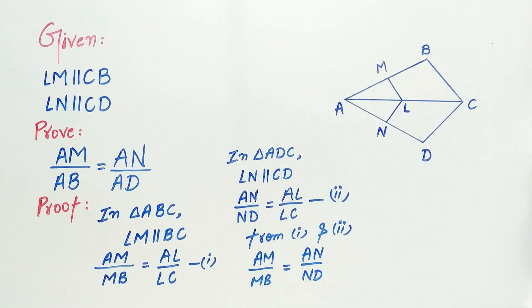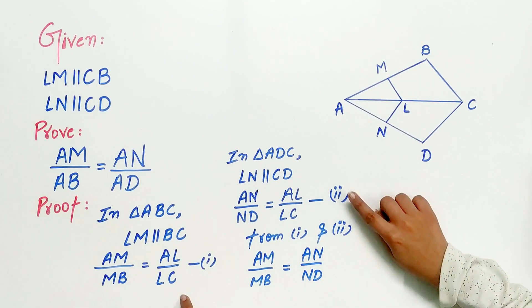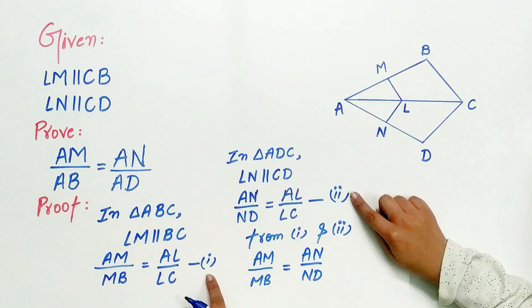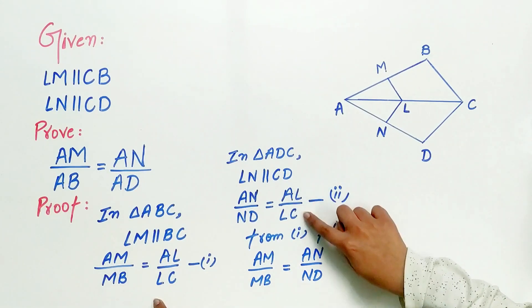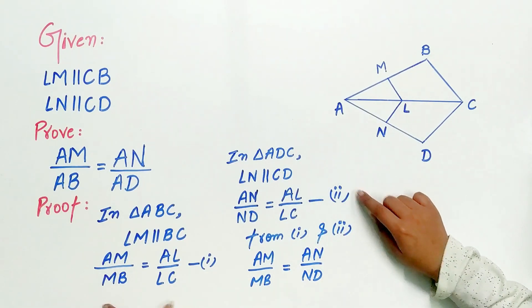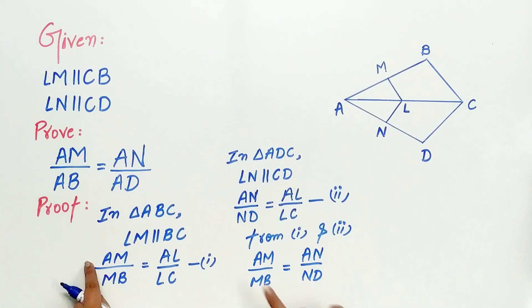Why? Because the right-hand side of both the equations is same. That is, AL by LC is present in both the equations. Hence, AM by MB is equal to AN by ND.